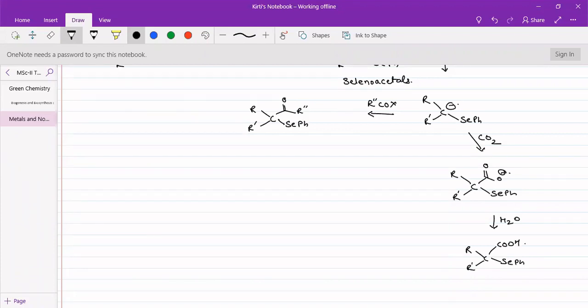This carboxylate upon hydrolysis will be giving the carboxylic acid. Further we can react with alkyl halide and many other types of reagents can also be utilized for this particular reaction.